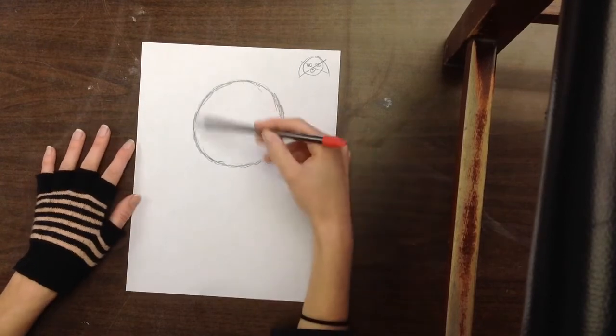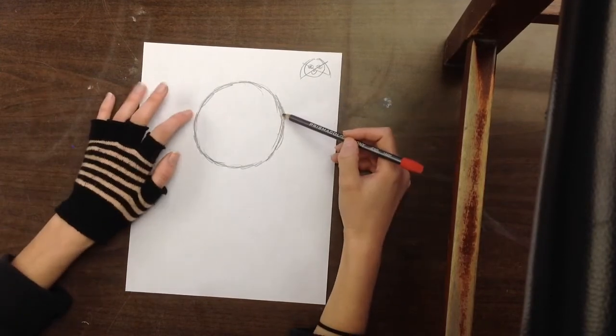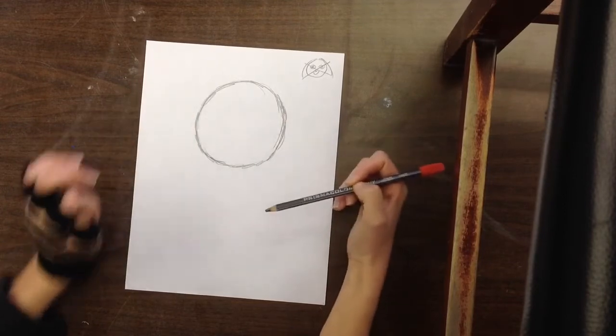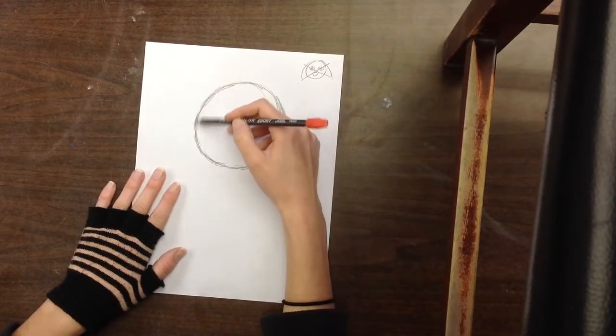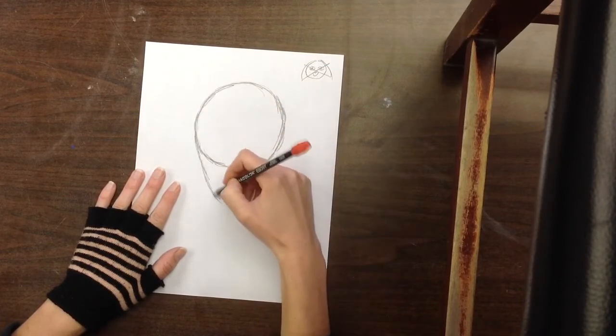Now I don't know any human being that has a perfectly circular head like that. So here's the first proportion: the top of your head is wider than the bottom of your head where your chin is. So we're going to take this circle and kind of elongate it into an oval.